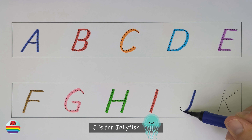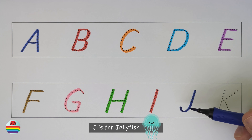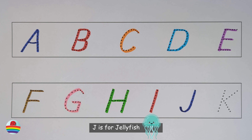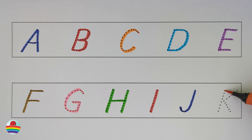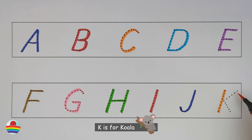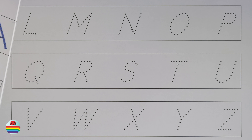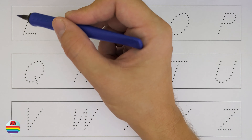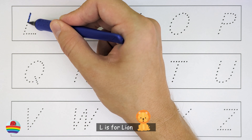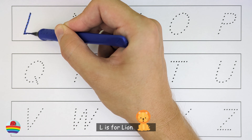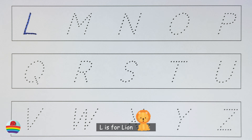J. J is for jellyfish. J. K. K is for koala. K. L. L is for lion. L.